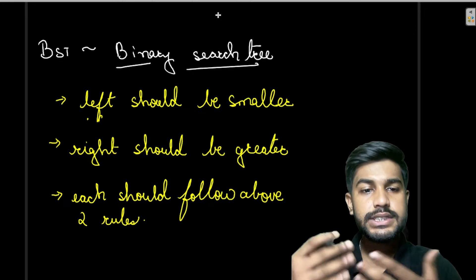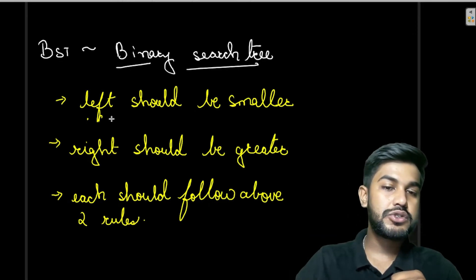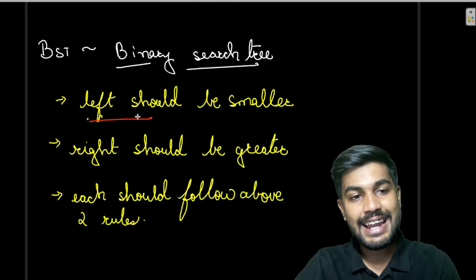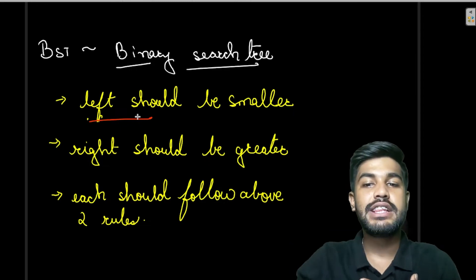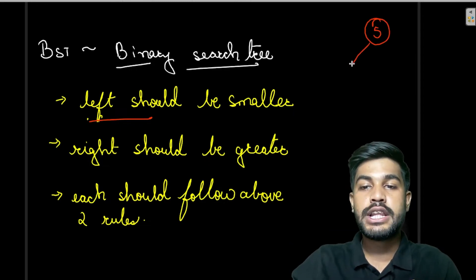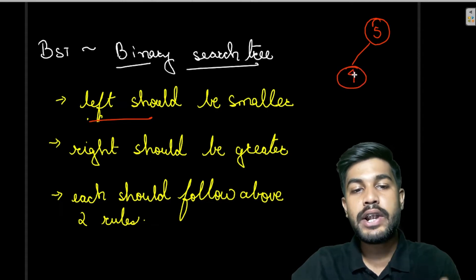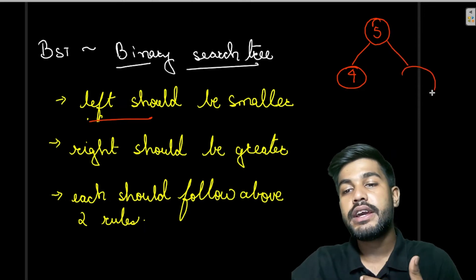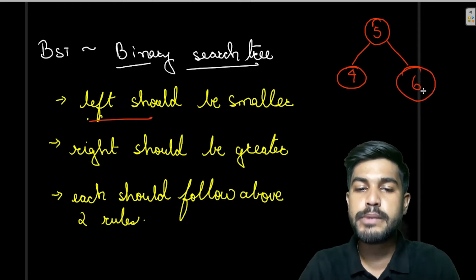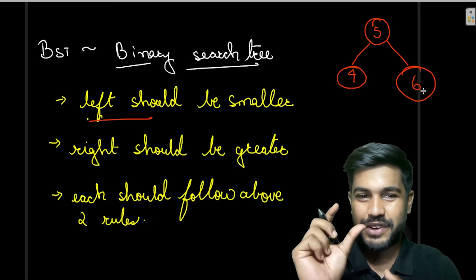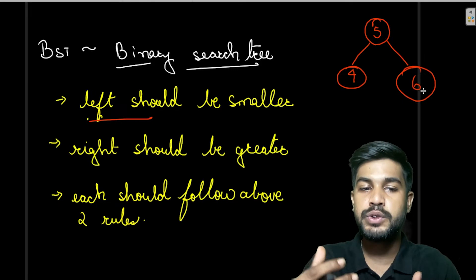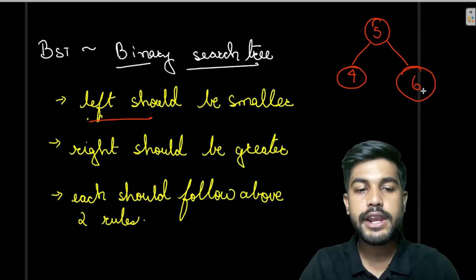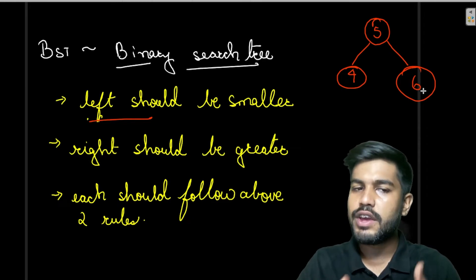In a Binary Search Tree, the left side should have nodes smaller than the root. Suppose the root has value 5, then the left side should have 4 — it can't be 6 or 7 — and the right side should be greater. You can remember this as: the boss is always right, and he would be above you, so on the right side the value would be more.